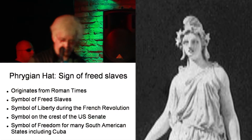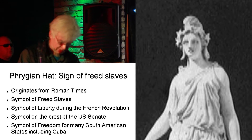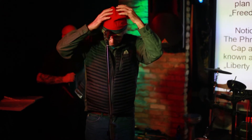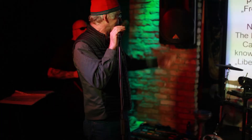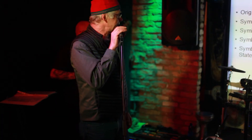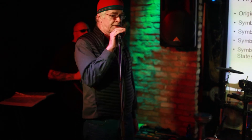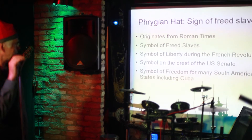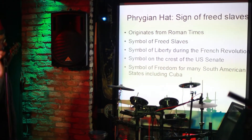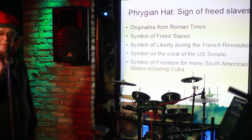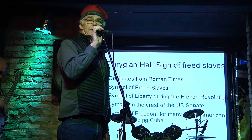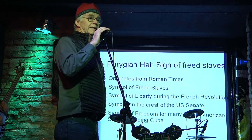I'll show you what this hat looks like — I've got one myself here. You might recognize it. It looks like a Schlumpf hat, sort of. The Phrygian hat is a symbol of freed slaves. It was a symbol of liberty during the French Revolution, and it's a symbol in the crest of the United States Senate, the crest of the United States Army, and the crest of Cuba. It's known as a symbol of liberty and freedom. But Jefferson Davis didn't want to have that on top of the building.